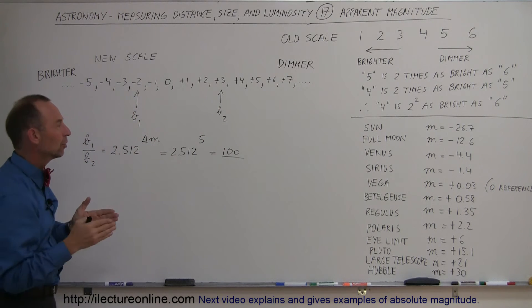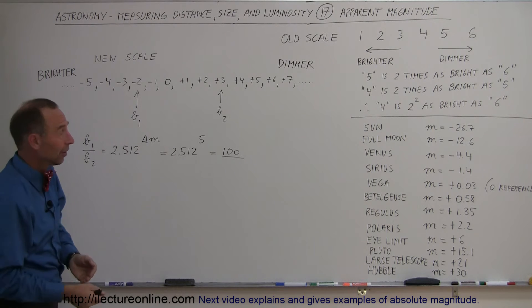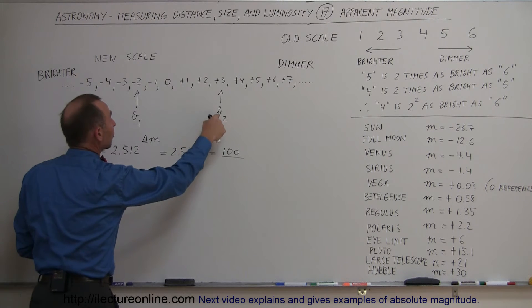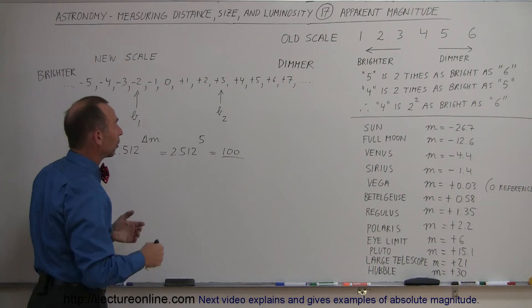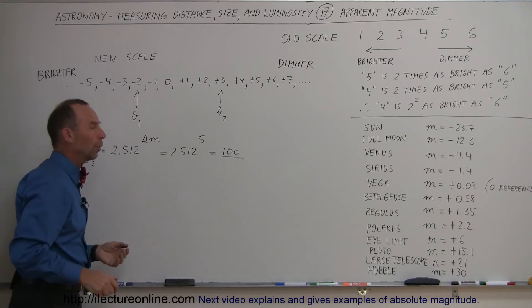A magnitude minus four is a hundred times as bright as a plus one, and so forth. A delta of five magnitudes means a hundred times brighter, or the other way around, star b is a hundred times dimmer than star a, or star two is a hundred times dimmer as star one.